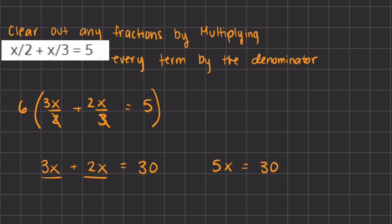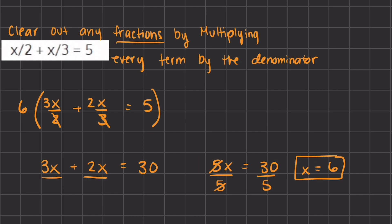We combined our like terms, and now we are going to divide by 5 on both sides to isolate x and find its simplified version. If we divide by 5 on both sides, we get x equals 30 divided by 5, which is 6. So 6 is the final value of x. We did this by first clearing out the fractions by multiplying every term by the denominator.